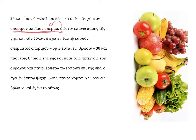So the seed which is — epano pases teis geis — the whole earth. The first object, then, of dedoka is khortan. The second object is xulan. I have given to you every plant, and — kai — every tree, xulan.